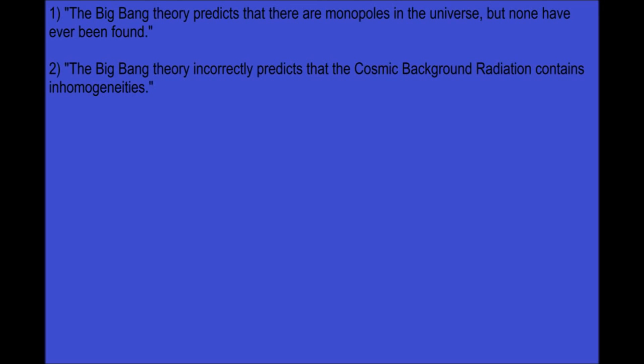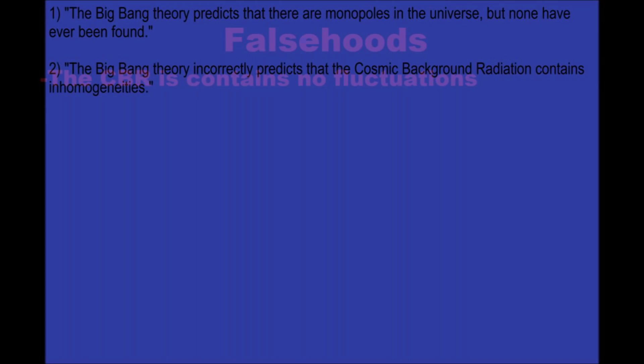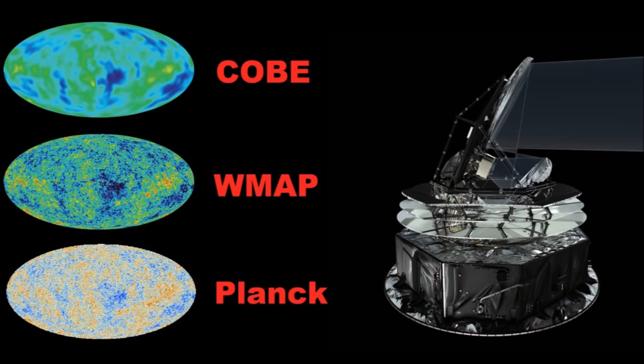Two. According to you, the Big Bang theory predicts that the cosmic background radiation contains inhomogeneities, but in reality it was in thermal equilibrium. Wrong! The COBE, WMAP, and Planck satellites have all independently confirmed that the background radiation has fluctuations in it. If this radiation really was in thermal equilibrium, there would be no structures in the universe, just an endless sea of particles distributed uniformly.